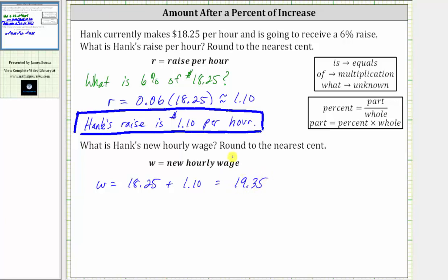Another way to answer the question would be to determine 106% of $18.25. Let's write this as a question. We have 106% here because 100% represents 100% of the starting wage per hour, and then plus an additional 6% per hour, which gives us 106% of the beginning wage.